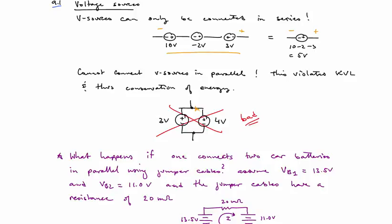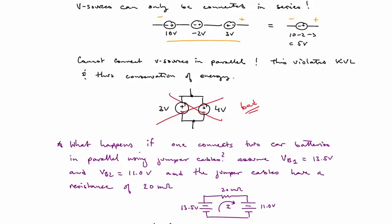Now, if there was a resistance between them, yes, you could, because then the differential voltage 1 volt would go across that resistor. But with no resistance, you cannot parallel two voltage sources.